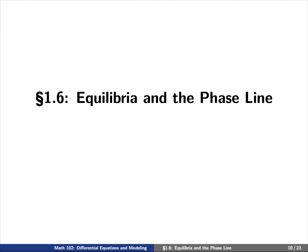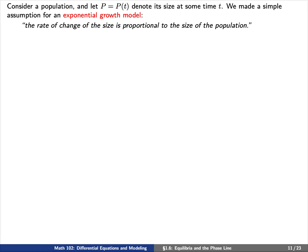Today we're going to discuss section 6, which is about equilibria and the phase line. To do so, let's start off with some concepts about population models.